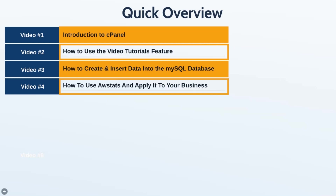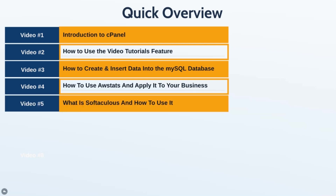Video four covers how to use AWStats, a statistics program that analyzes and shows you what is happening inside your website, and how to apply it to your business. Video five covers what Softaculous is and how to use it. Some of you might see a program called Fantastico — keep in mind that Fantastico is no longer supported and has been replaced by Softaculous. We'll talk about how it helps you run your business.